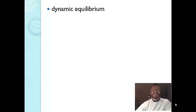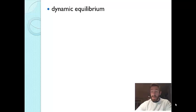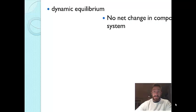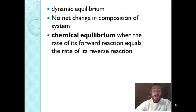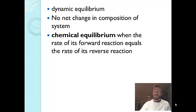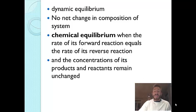Equilibrium is referred to as dynamic — it's two reactions going on at the same time: the reactants forming the products, and the products forming the reactants. At equilibrium, there's no net change in the composition of the system. The definition of chemical equilibrium is when the rate of the forward reaction is equal to the rate of the reverse reaction. When this occurs, the concentrations of the reactants and products remain unchanged.